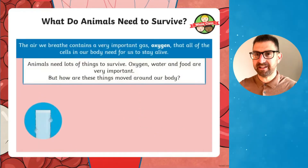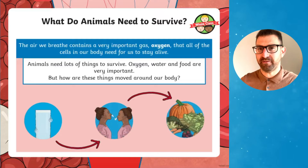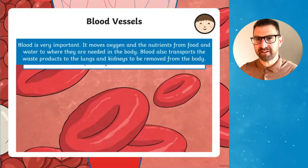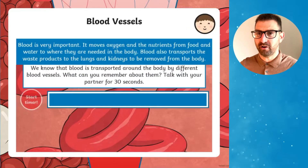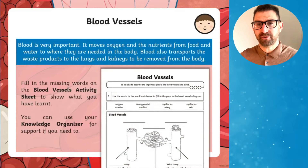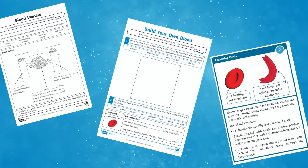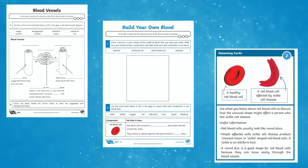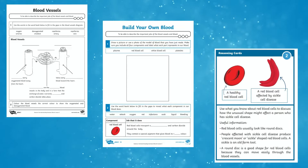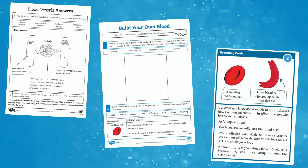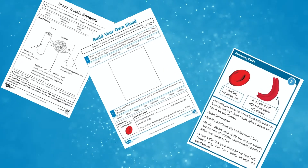Diagrams and colorful animations clearly show how the heart works. The language used is age-appropriate and contains key scientific vocabulary to help children understand the function of the lungs and what the blood vessels do. There are three activity worksheets including blood vessels, build your own blood, and reasoning cards, which complement the PowerPoint.